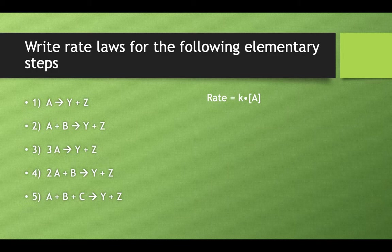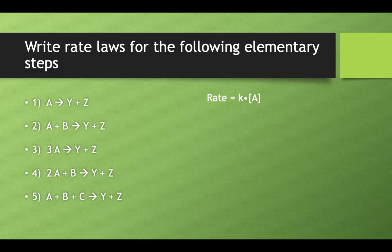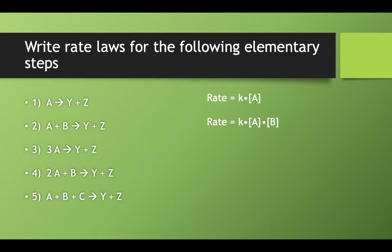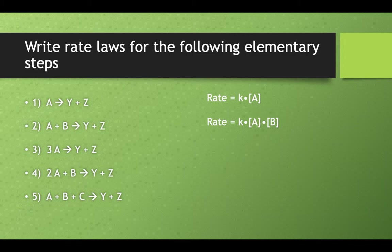If we had A and B coming together, our rate law equation for that elementary step would be K, our rate constant, A to the first power, B to the first power, because in our balanced chemical equation, A and B both have imaginary ones as coefficients.